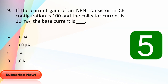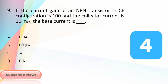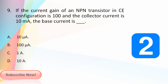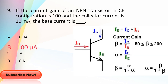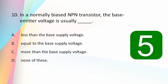If the current gain of a PNP transistor in common emitter configuration is 100 and the collector current is 10 milliamps, the base current is: 10 microamps, 100 microamps, 1 amp, or 10 amps? The answer is 100 microamps. Since β = IC/IB, we get IB = IC/β. Substituting the values gives 100 microamps.